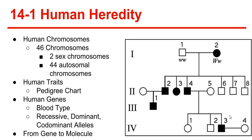All human eggs carry a single X chromosome — 22 autosomes and one sex chromosome. However, half of the sperm cells carry an X chromosome, and the other half carry a Y chromosome. This ensures that the offspring will be approximately half female and half male.